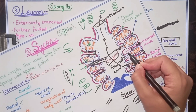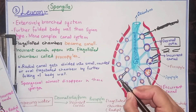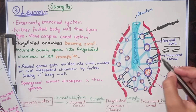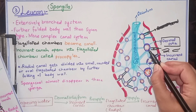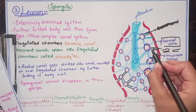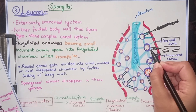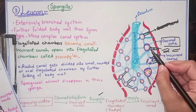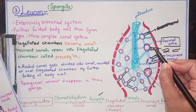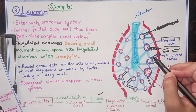After the dermal ostia, water enters the incurrent canals. These incurrent canals are very high in number. The incurrent canal, by the help of dermal ostia, brings water inside the Leucon body. Next to the incurrent canal, water goes into the radial canal. At the end of the incurrent canal there is an opening known as the prosopile. From the prosopile, water enters from the incurrent canal to the radial canal.